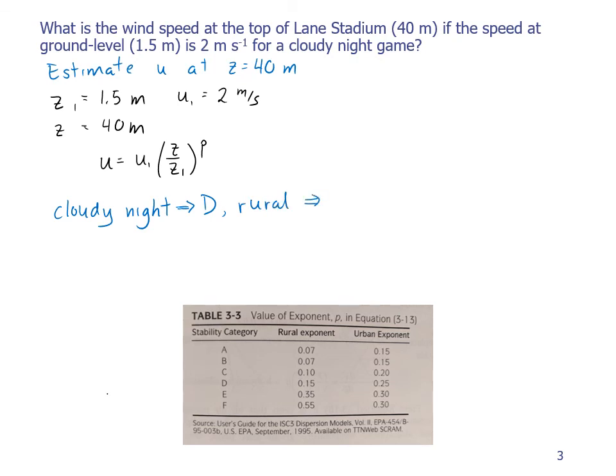And that means we look at class D in a rural area, our p is equal to 0.15. So now I can make the substitution where my u is equal to u1, 2 meters per second, times z, 40 meters, over z1, 1.5 meters, all to the 0.15 power, and that gives me 3.3 meters per second.